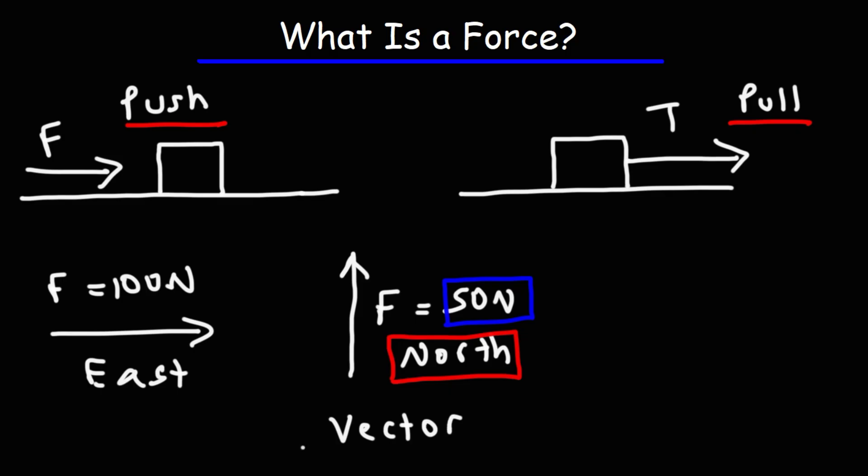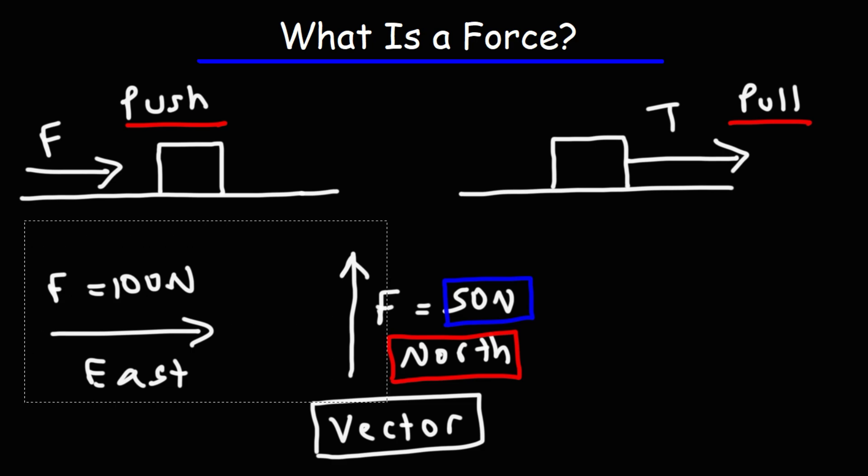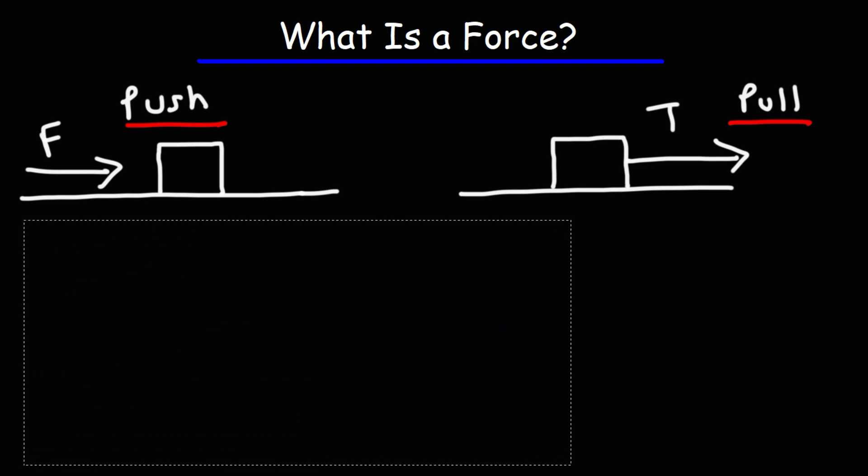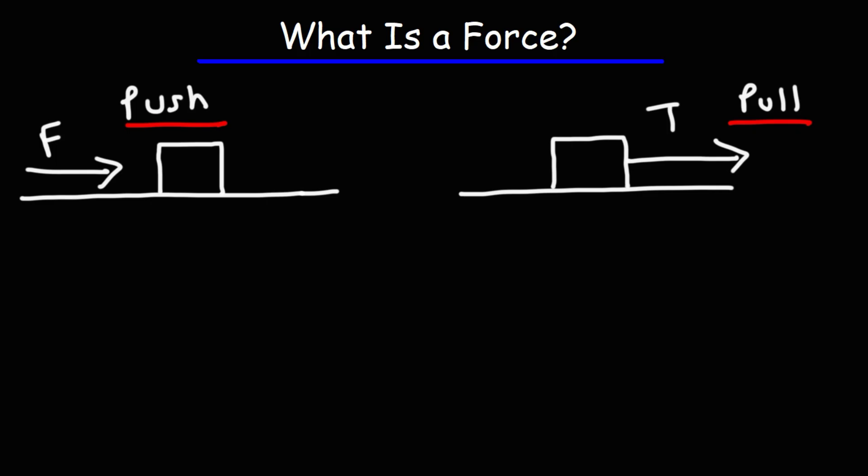So force is a vector, and like any vectors, they can be added, they can be subtracted, and so forth. Now, what can forces do? Forces can affect the speed of an object. They can cause it to speed up. They can cause an object to slow down. They can cause an object to change direction. They can cause an object to change shape or change size.